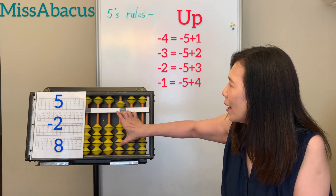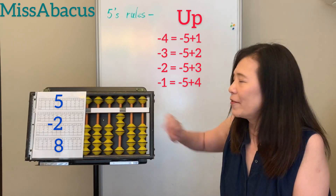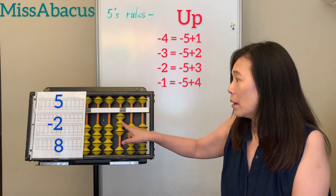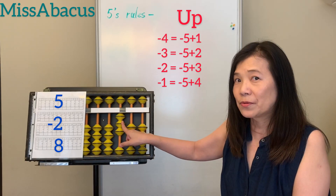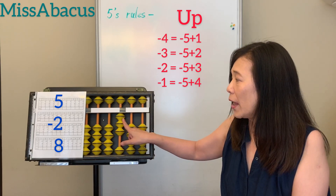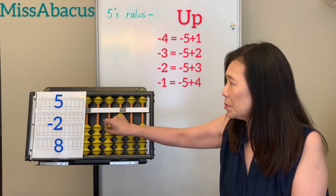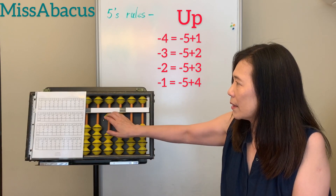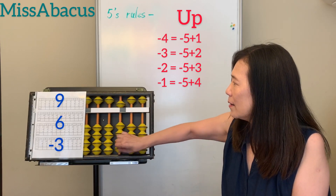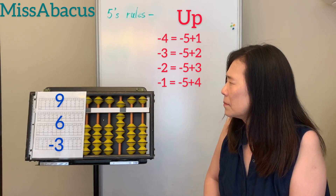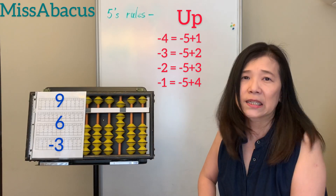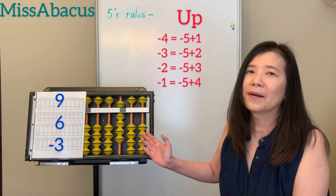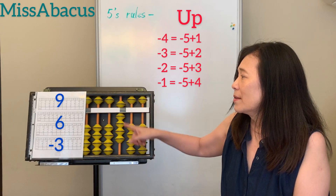Number 4: 5 minus 2. Minus — up 3, up 5. Plus 8: big number, of course 10's rule. If you don't have enough beads, for the 8: minus 2, plus 10. Answer: 11.